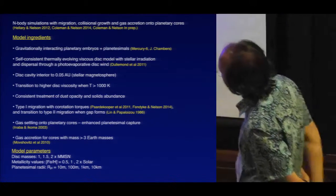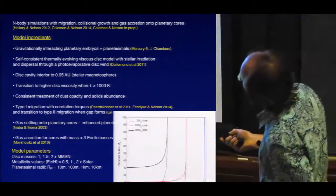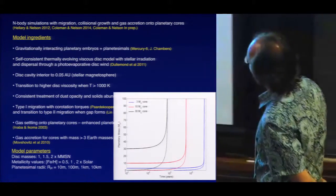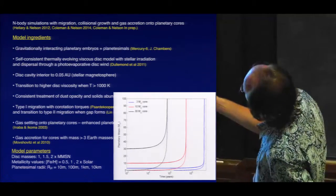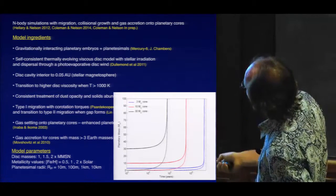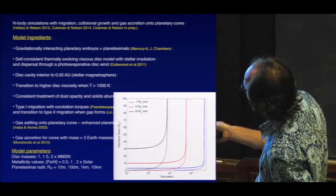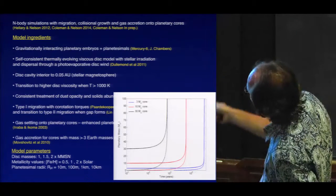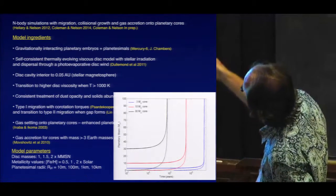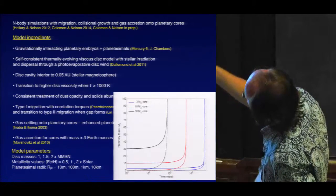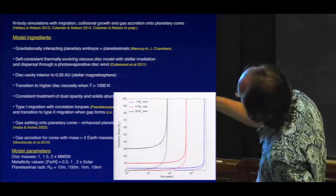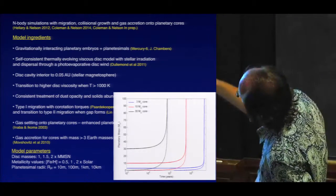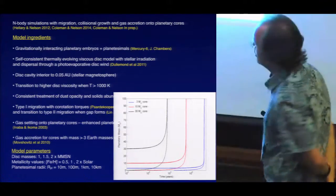We incorporate gas accretion onto cores when the core mass exceeds about 3 Earth masses, using fits to models published by Movshovitz et al. 2010. For a 3 Earth mass core, it takes a few million years to get a planet undergoing runaway gas accretion to become a giant planet. With a 30 Earth mass solid core, you get much more rapid gas accretion — more rapid accretion onto a heavier core.